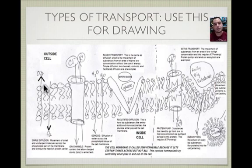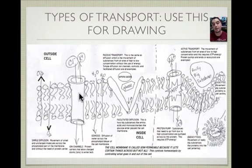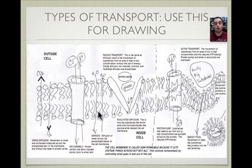Ion channels are proteins that allow charged molecules — like chlorine and potassium ions — to go in and out. Osmosis is simply water going in and out, similar to simple diffusion but specifically for water, which is vital to our survival — so we give it its own name: osmosis.